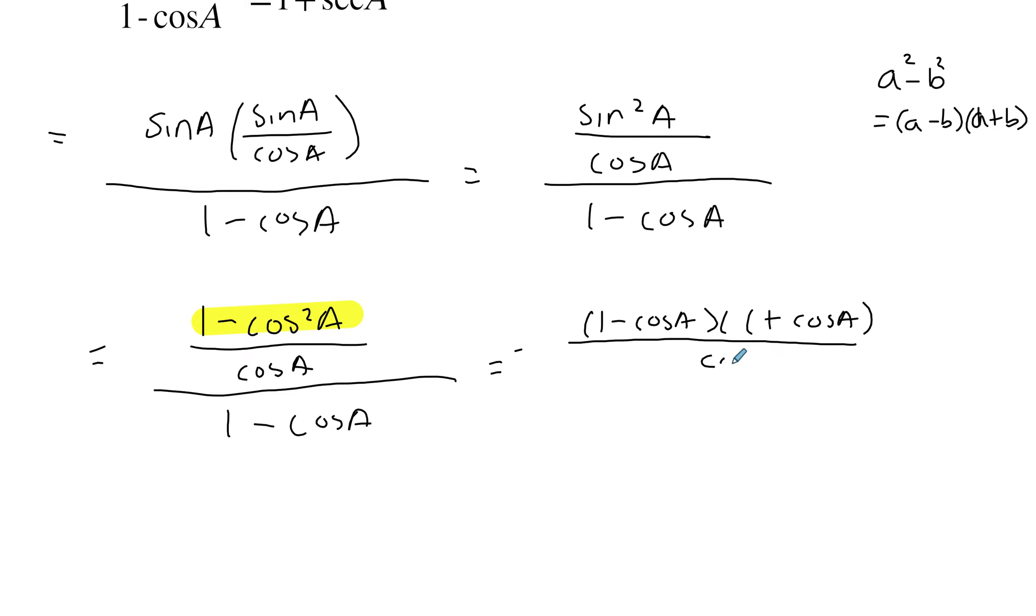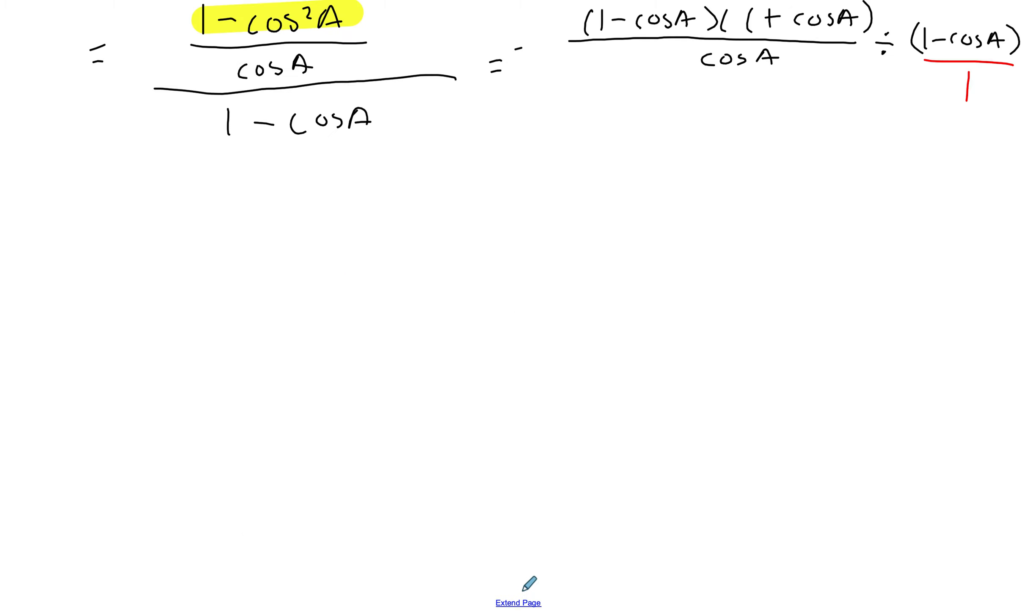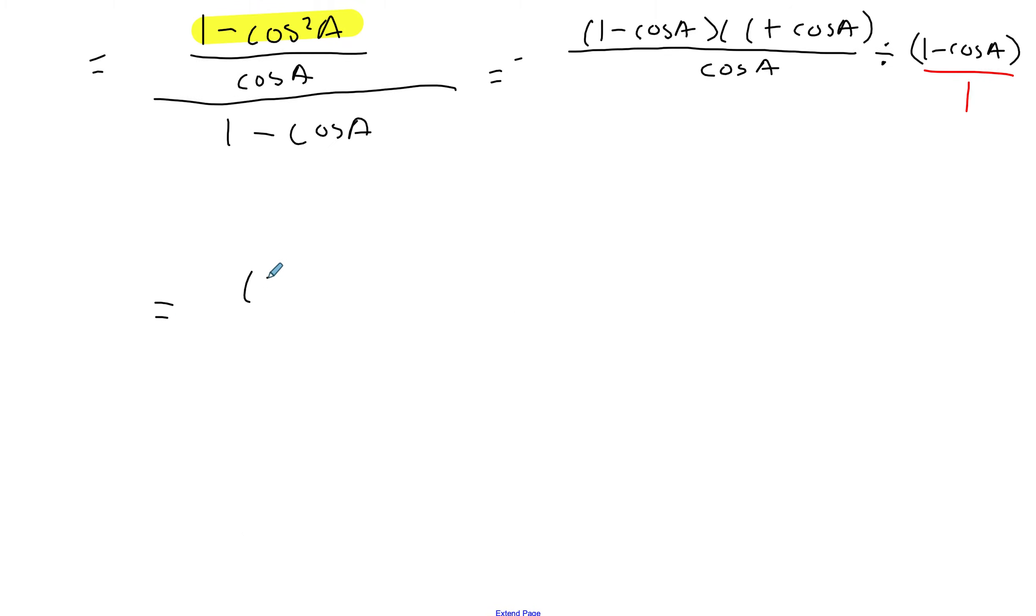All of this divided by cos A and then I'm just going to do myself a favor and say all of this is divided by 1 minus cos A. And this is where I'll reciprocate this fraction and change the division to a multiplication. So I'm going to get 1 minus cos A times 1 plus cos A over cos A times 1 over 1 minus cos A and these two lovely things cancel out. And all I'm left with is 1 plus cos A, I get 1 over cos A.